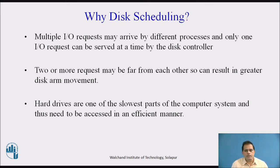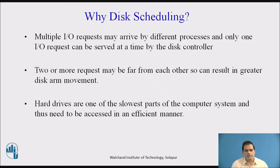Why disk scheduling? Disk scheduling is important because there are multiple IO requests arriving from different processes, but only one IO request can be served at a time by the disk controller. The OS accepts all requests from the request queue and entertains only one at a time. Other IO requests need to wait in the waiting queue. Two or more requests may be far from each other, resulting in greater disk arm movement. Hard drives are one of the slowest parts of a computer system and need to be accessed efficiently, which is why we use disk scheduling.